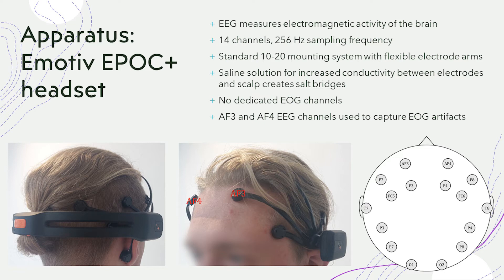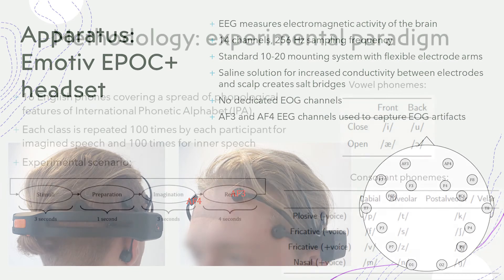A common artifact in neural signals is EOG, caused by eye and eyelid movements. These artifacts can be detected and filtered with the help of dedicated EOG channels, which the Epoch Plus, as a low-cost, low-density device, does not contain. Instead, the labeled channels AF3 and AF4 are allocated to capture EOG artifacts.